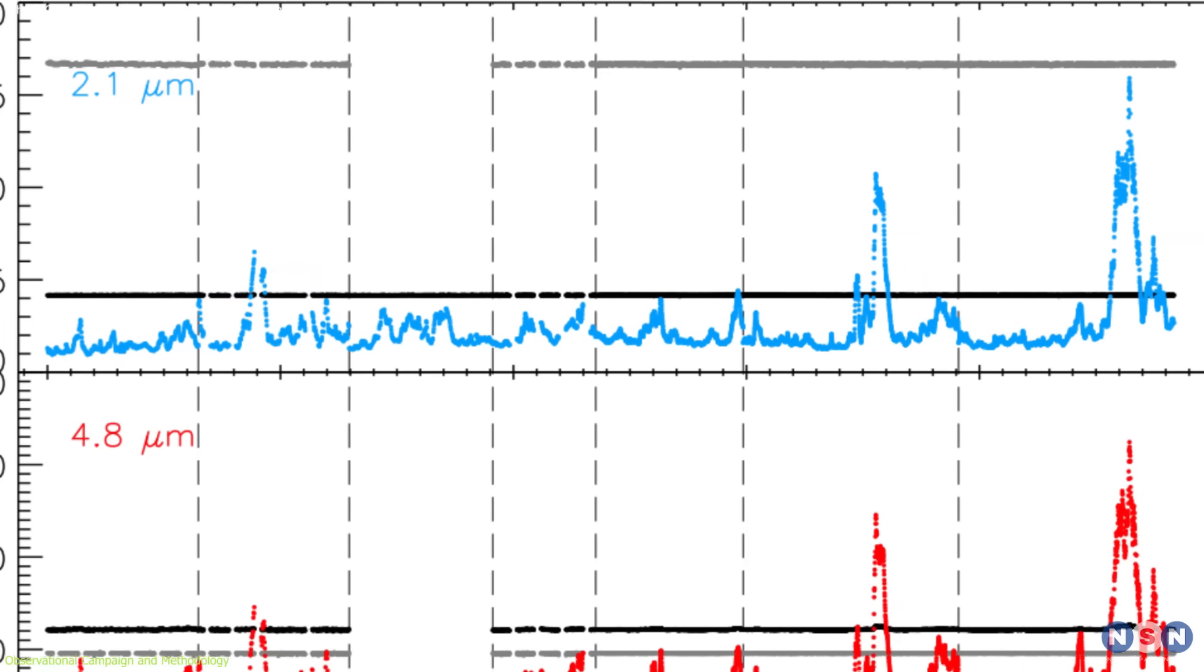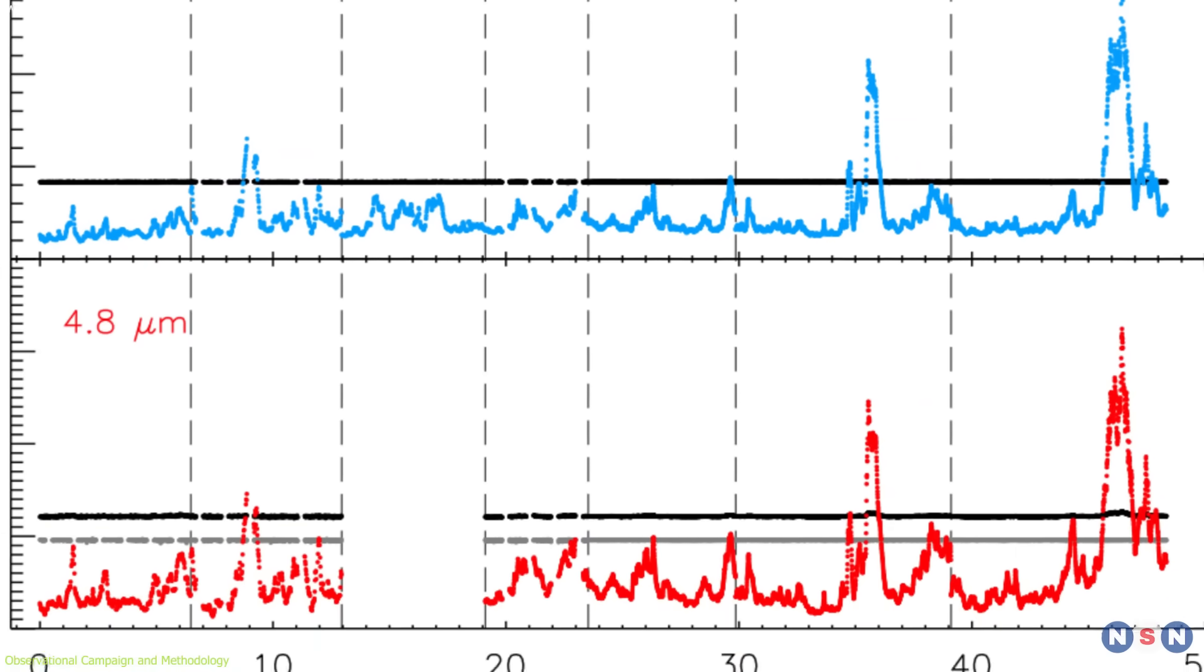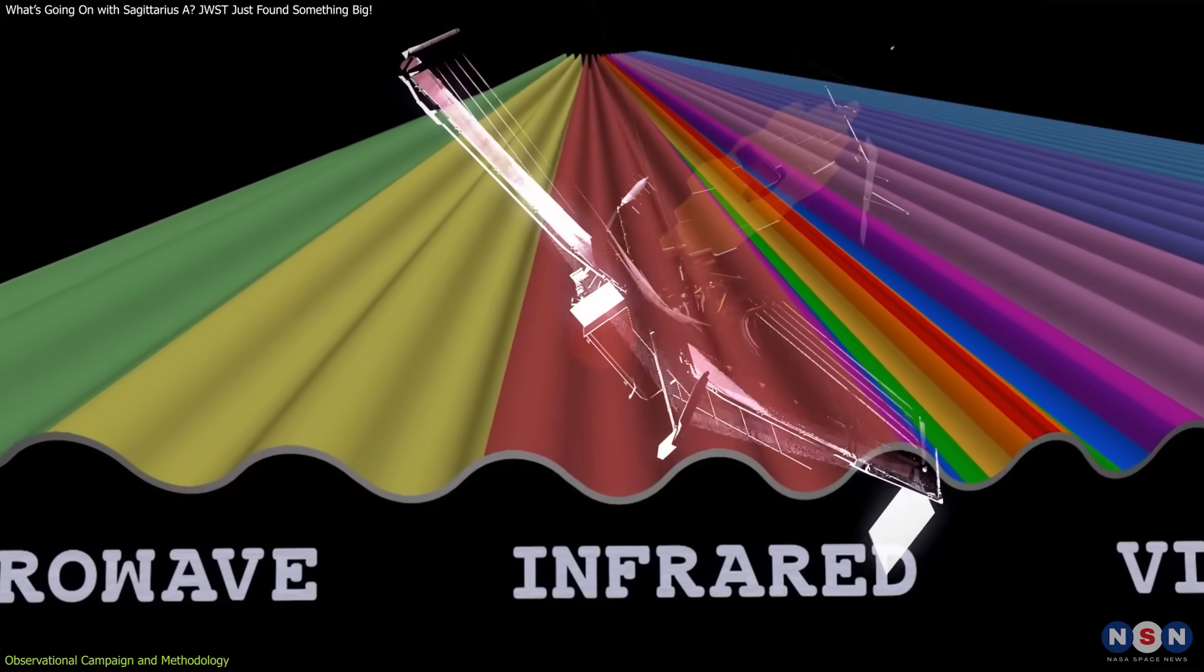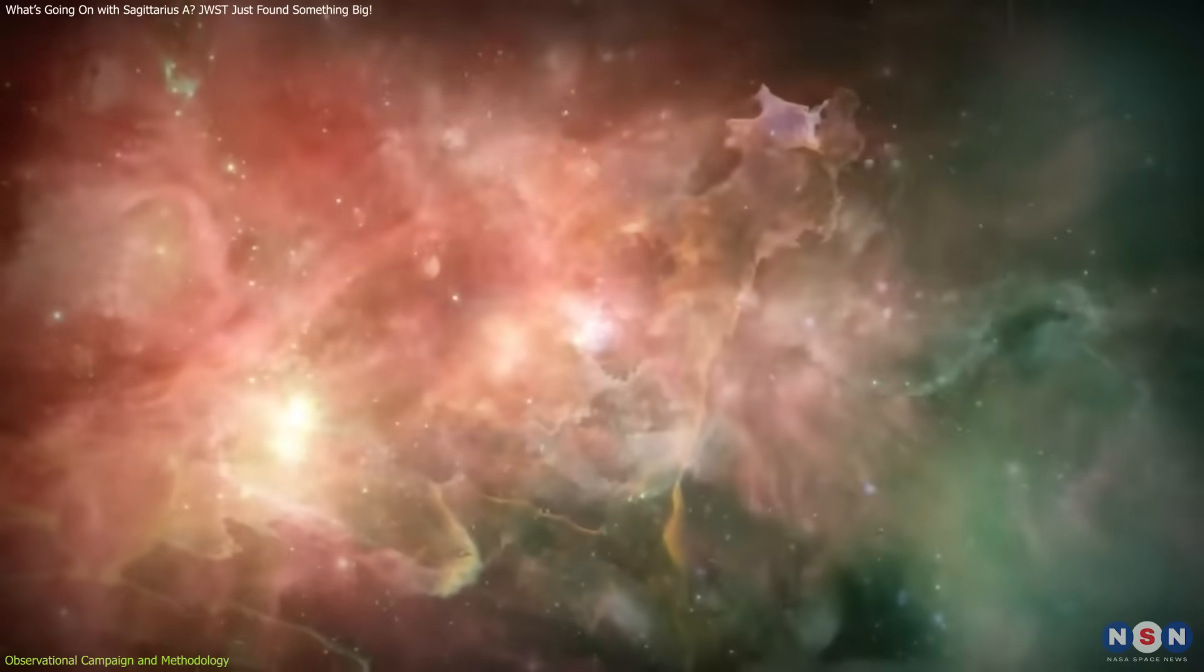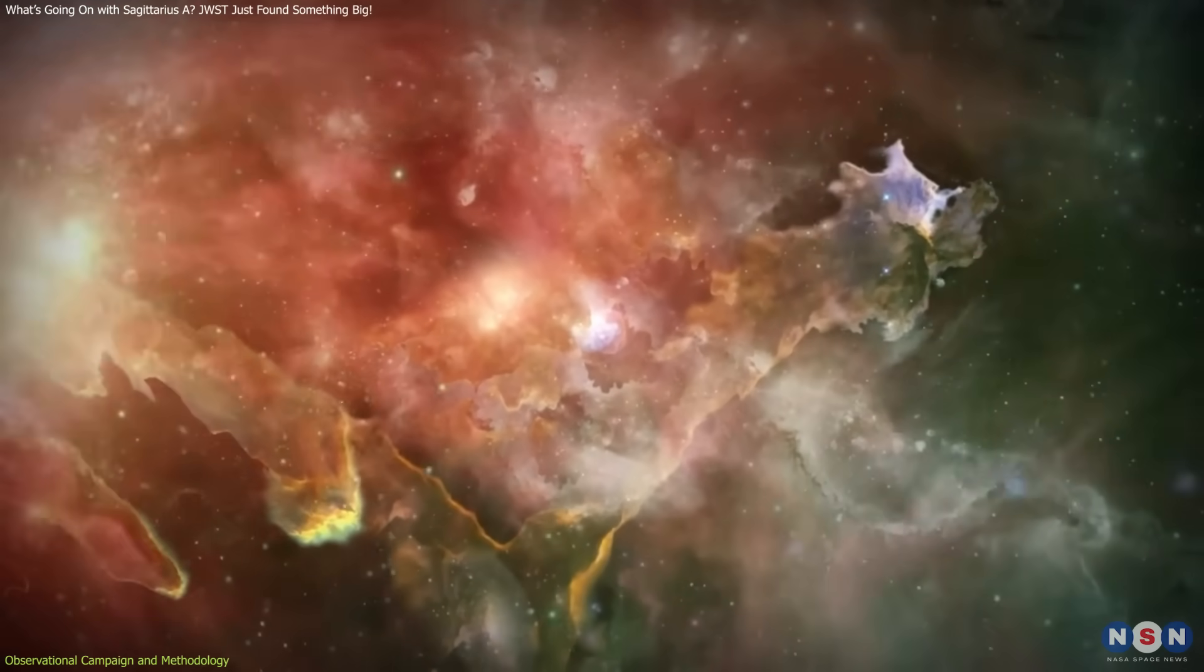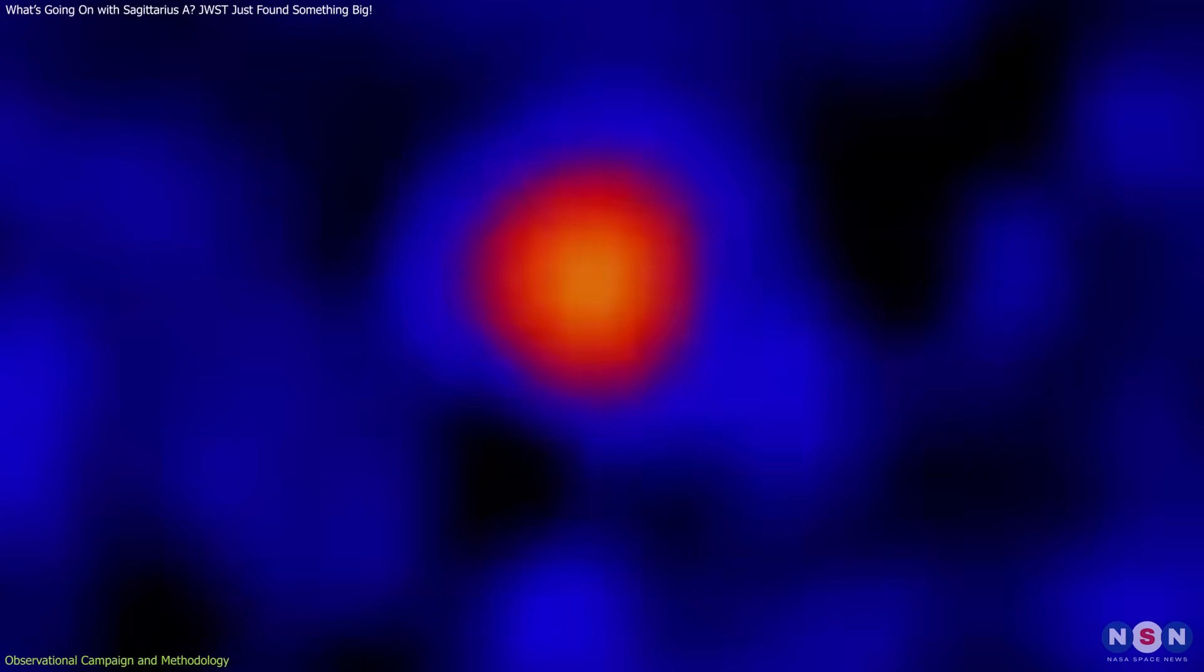These sessions were divided into 8 to 10-hour increments, allowing scientists to capture the transient and volatile nature of the emissions from the black hole's vicinity. The choice of near-infrared wavelengths was strategic. This spectrum can penetrate the dense interstellar dust that often veils the galactic center, providing a clearer view of the phenomena occurring around this supermassive black hole.